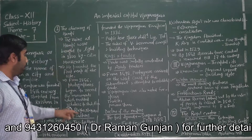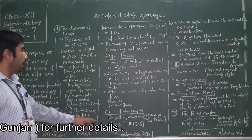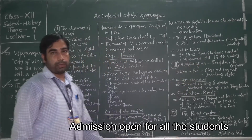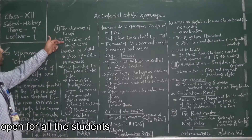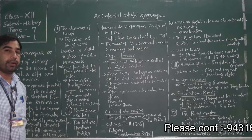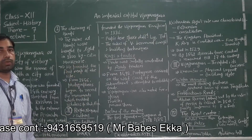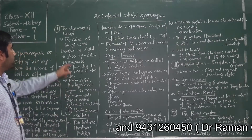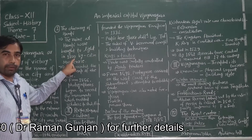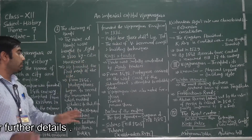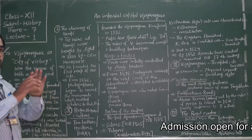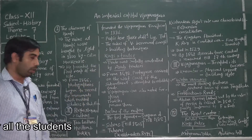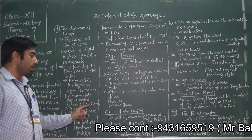We will see one by one: the discovery of Hampi, then Rayas, Naikas and Sultans, then Vijayanagara the capital and its environs, and the royal center. The ruins at Hampi were brought to light in 1800 by Colin MacKenzie, who was an engineer and an employee of the English East India Company. He presented the first map of the site. From 1856, photographers began to record the monuments, which enabled scholars to study them.